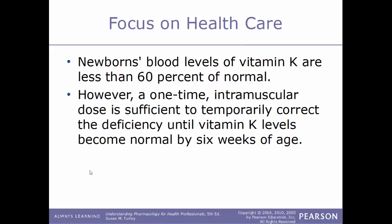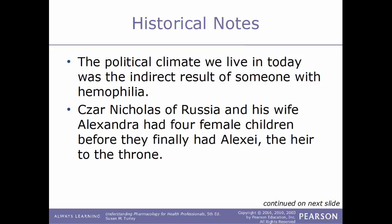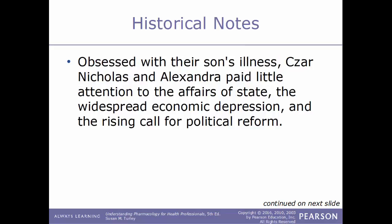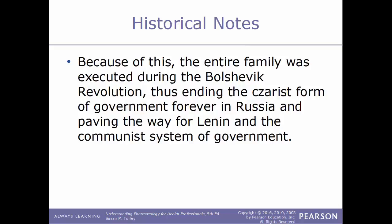Historical note: the political climate we live in today was indirectly the result of someone with hemophilia. Czar Nicholas II of Russia and his wife Alexandra had four female children before finally having Alexei, their heir to the throne and only male child. Alexei had hemophilia because his mother was a carrier of the hemophilia gene and was very frequently near death. Obsessed with their son's illness, Czar Nicholas and Alexandra paid little attention to the affairs of Russia, the widespread economic depression, and general affairs of state. This led to a rising call for political reform, and the entire family was executed during the Bolshevik Revolution, ending the czar's form of government forever in Russia and paving the way for Vladimir Lenin and a communist system of government.